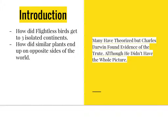Throughout the world, we see similarities in creatures that live on isolated parts of the world from each other. On the continents of Africa, South America, and Australia, we see flightless birds like ostriches, rheas, and emus, respectively. How can these animals cross such vast distances of water if they have no means of moving through the air or effectively crossing large bodies of water?